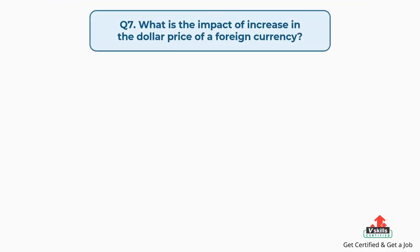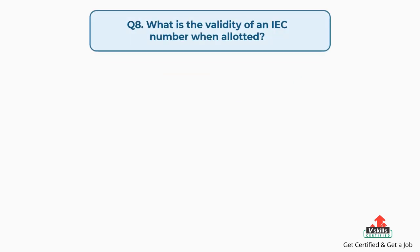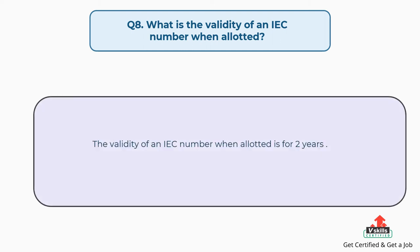Question number seven: what is the impact of an increase in the dollar price of a foreign currency? The answer is: the impact of an increase in the dollar price of a foreign currency will directly benefit the U.S. importers. Question number eight: what is the validity of an IEC number when allotted? The answer is: the validity of an IEC number when allotted is for two years.